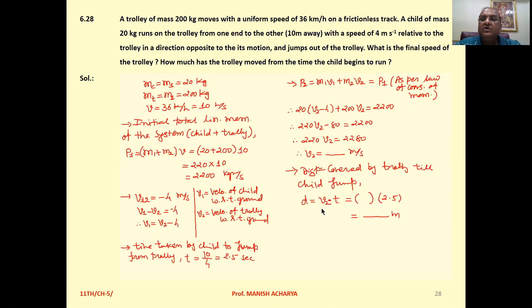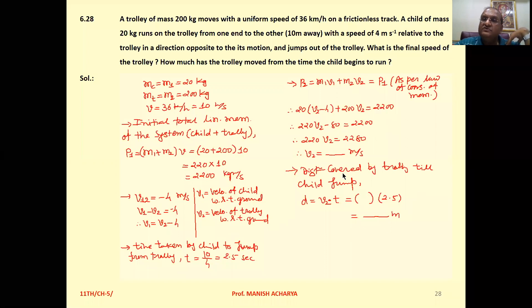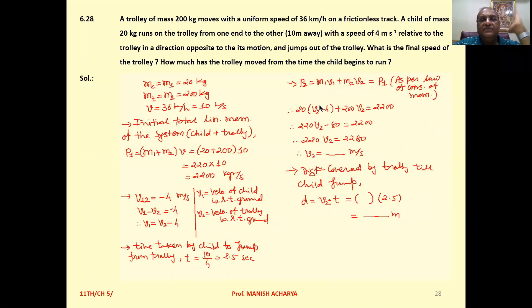Within these 2.5 seconds, the distance covered by the trolley is V2 × T. Substitute the value of V2 we calculated and time T = 2.5 seconds. Solving this gives the distance covered by the trolley when the child jumps from it.